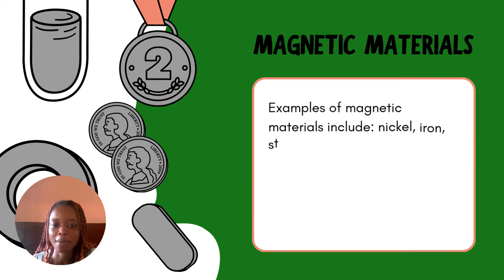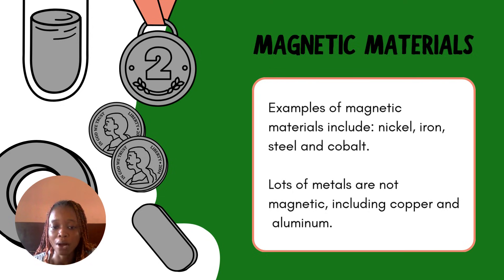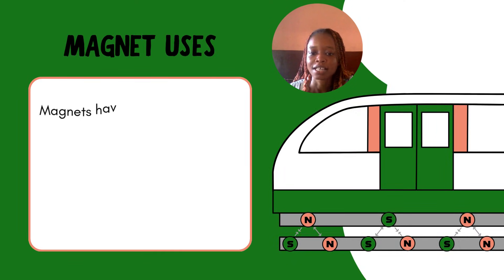When we talk about magnetic materials, we're talking about materials that magnets are able to attract — materials that can be attracted by a magnet. Examples of magnetic materials include iron, nickel, steel, and cobalt. Many metals are non-magnetic — mostly the ones we use in making pots — that's why your pots are not magnetic. So the magnetic materials are nickel, iron, steel, and cobalt.